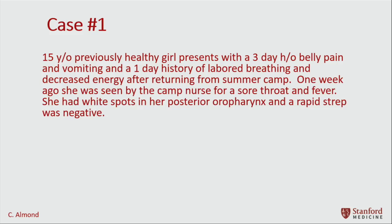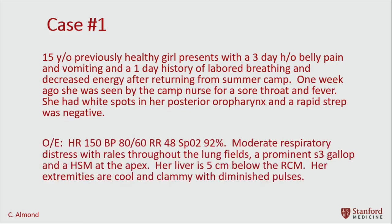This is a 15-year-old previously healthy girl who presents with a three-day history of belly pain and vomiting, and a one-day history of labored breathing and decreased energy after returning from summer camp. One week ago, she was seen by the camp nurse for a sore throat and a fever. She had white spots in her posterior oropharynx, and her rapid strep test was negative.